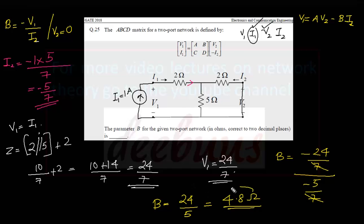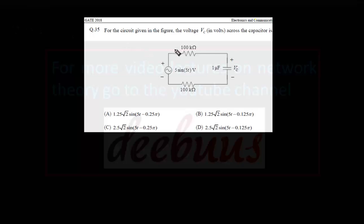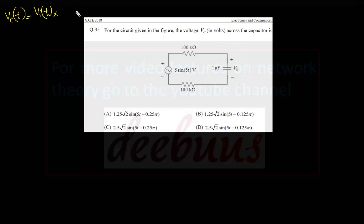Moving to the next question: for the given circuit in the figure, we have to calculate the voltage across the capacitor. It is a series combination of R and C with an AC sinusoidal input. We apply the voltage division rule. The capacitor voltage Vc(t) equals the input voltage Vi(t) times Zc divided by total impedance Zc plus R, where R includes both 100 kΩ resistors.